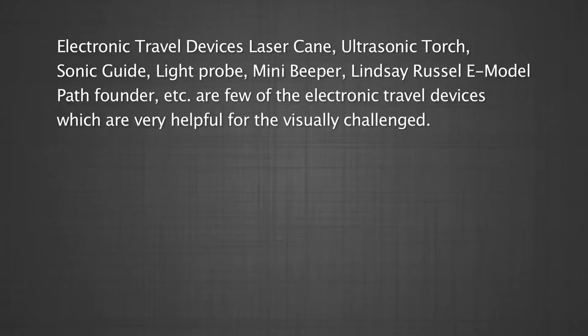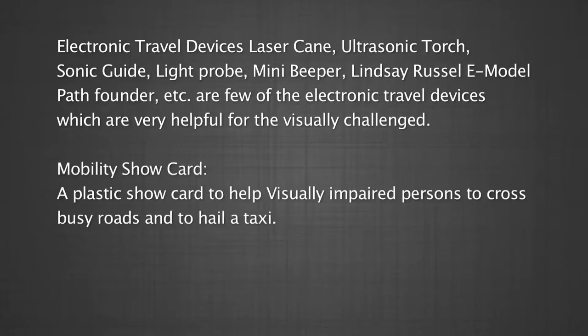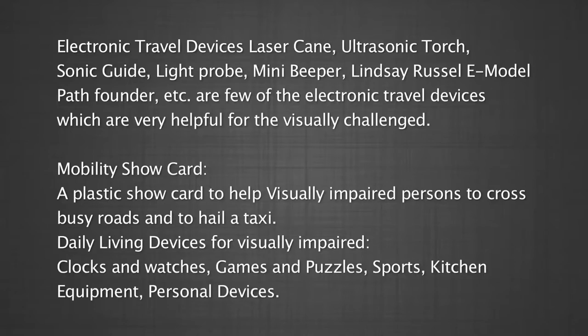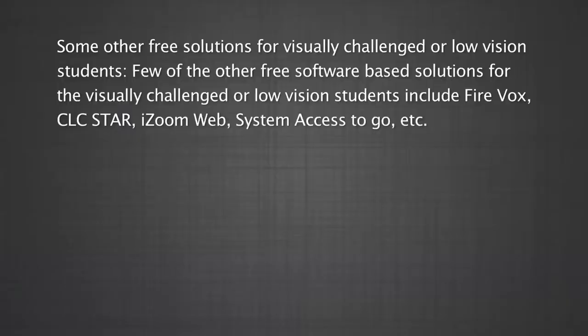Mobility show card: A plastic show card to help visually impaired persons cross busy roads and hail a taxi. Daily living devices for visually impaired include clocks and watches, games and puzzles, sports, kitchen equipment, and personal devices. Script Talk Station: This device helps to scan and read small print and look-alike packaging of medicine vials, which can lead to confusion, non-compliance, and mistakes. Some other free software-based solutions for visually challenged or low vision students include Firefox, CLC Star, iZoom Web, System Access to Go, etc.